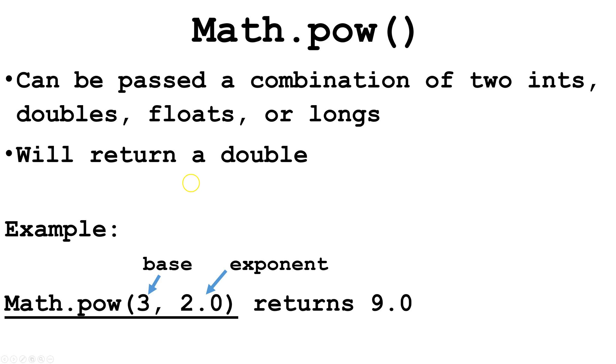Here is an example. In this case, we want to take 3 and put it to the power of 2. So we put our base, a comma, and then our exponent.